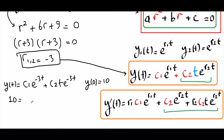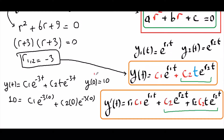So 10 = c1·e^(-3·0) + c2·0·e^(-3·0), because here our t variable is 0 and y(t) = 10. The 0 times anything cancels out, e^0 = 1, so c1 = 10.